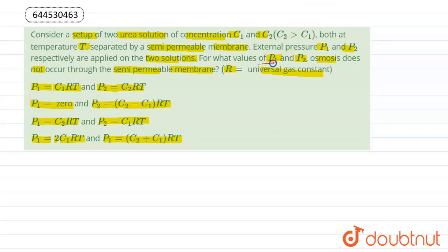In this question, we are asked for what values of pressures P1 and P2 osmosis does not occur through the semi-permeable membrane. In option A, P1 = C1RT and P2 = C2RT. These are values of osmotic pressure, and osmotic pressure is the pressure applied on the solution side which stops the process of osmosis. So the first option is correct.